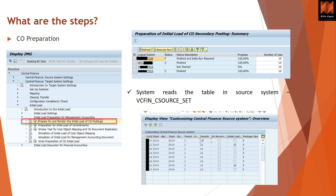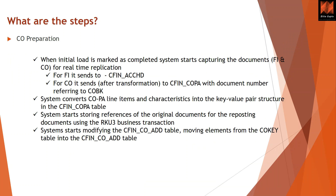What are the CO steps for the initial load? First, you must configure VCFIN_SOURCE_SET in the source system. Then you run the preparation and monitor step for initial load CO posting, executed by system and controlling area. System reads the VCFIN_SOURCE_SET table in the source to determine the period, fiscal year, and company code configured. Once the initial load is flagged as complete, the system begins capturing documents for both FI and CO replication.